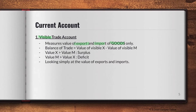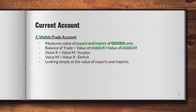For example, if your economy imports 500 Nike shoes, this would be registered under the visible trade account. If you export 300 Adidas shoes, that would also be registered in your visible trade account. The Balance of Trade (BOT) is the value of visible exports minus the value of visible imports. A surplus means more exports than imports; a deficit means more imports than exports in your visible trade account.